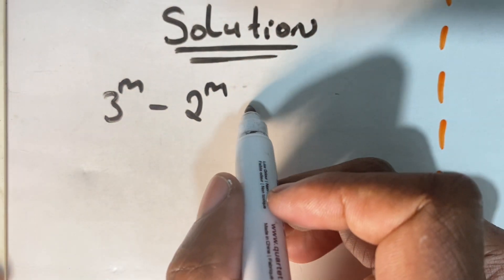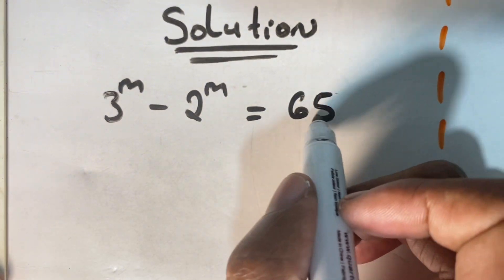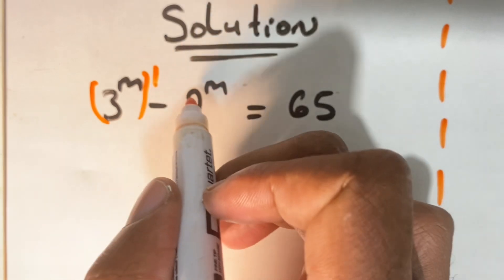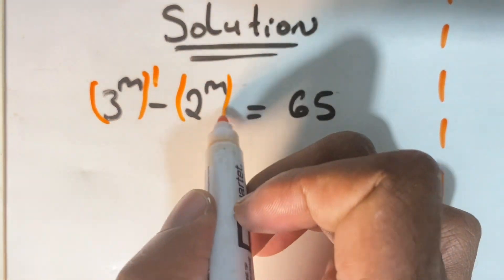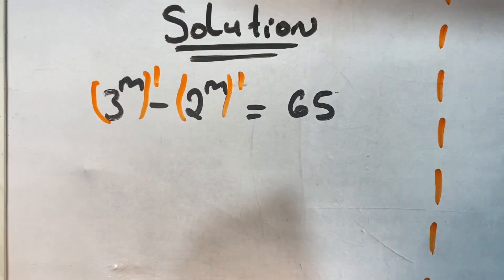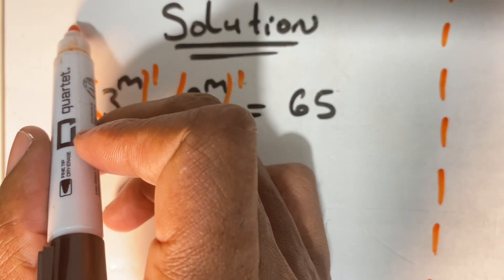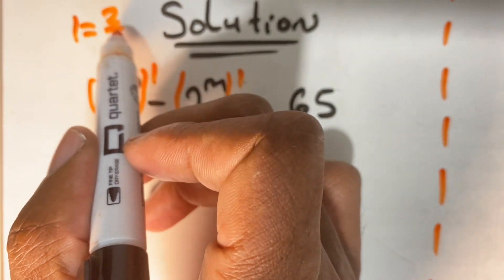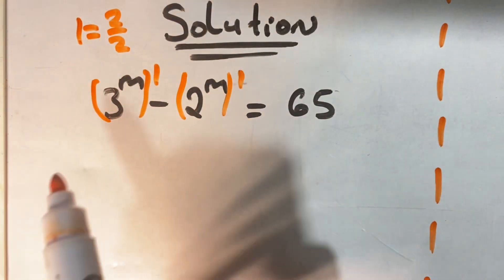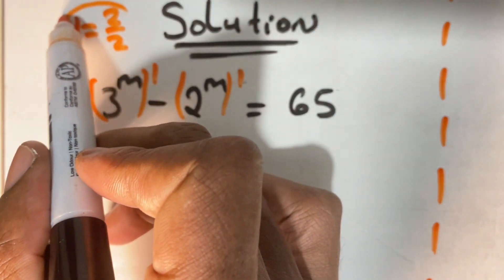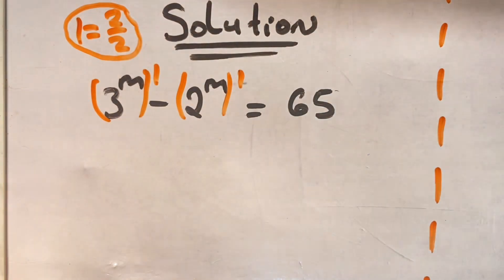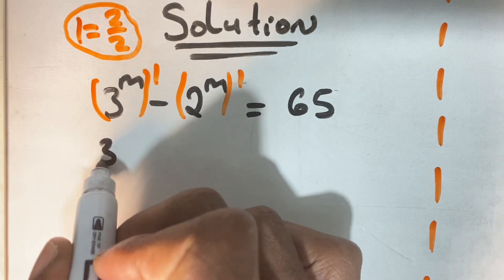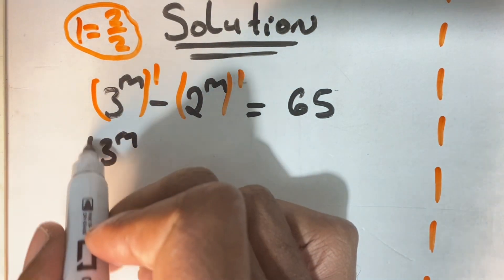We have 3 to the power of m minus 2 to the power of m is equal to 65, and we are given to solve m. To solve this equation we can write our expression as follows: 3 to the power of m in brackets and 2 to the power of m in brackets, to the power of 1. We know 1 is the same as 2 over 2, so we are using the principle of equivalent fractions to solve this equation.